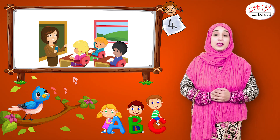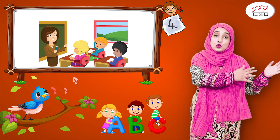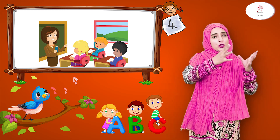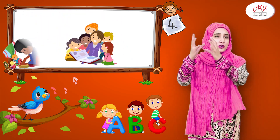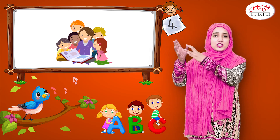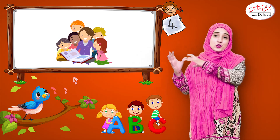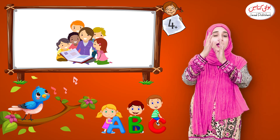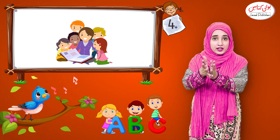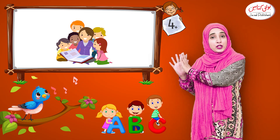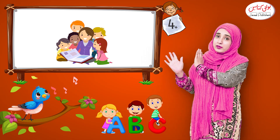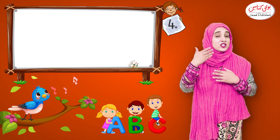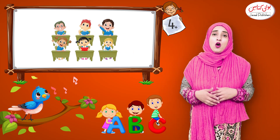First, let's play a game. You can divide the class into two or three groups. Give one group Q, one group R, and one group both Q and R. One group will call or write Q-related words, another R-related words, and the third group mixed Q and R words. This way you will recognize and be able to write Q and R.